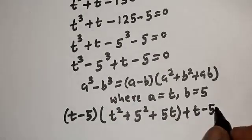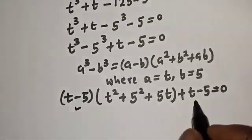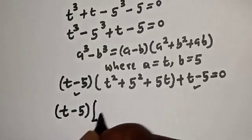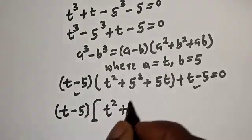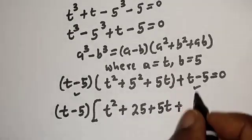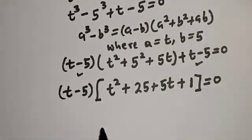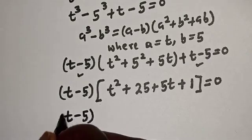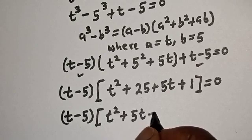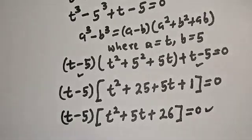We can see that (t minus 5) is common here. Let's bring it out. We have (t minus 5) times (t² plus 25 plus 5t plus 1) equals zero. This simplifies to (t minus 5)(t² plus 5t plus 26) equals zero.